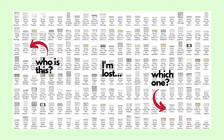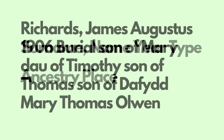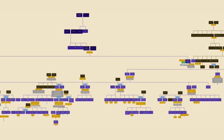So how am I doing it now? Now I write the surname, the name, the year, the record type, plus their ancestry and a place. When I look through my folders of these 18,000 records now, for each of my files, I've given myself a map to be able to find that person in my tree without having to even open the record.